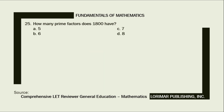Problem number 25. How many prime factors does 1,800 have? A. 5, B. 6, C. 7, D. 8. Here is our solution.